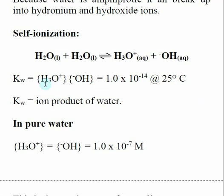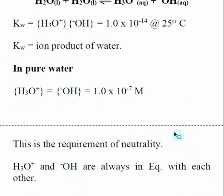But in pure water, if we look at this expression, it means that the concentration of hydronium is equal to the concentration of hydroxide, which is 1.0 × 10^-7. And this is actually our definition of neutrality. Our definition of neutrality is that the concentration of hydronium is equal to the concentration of hydroxide.